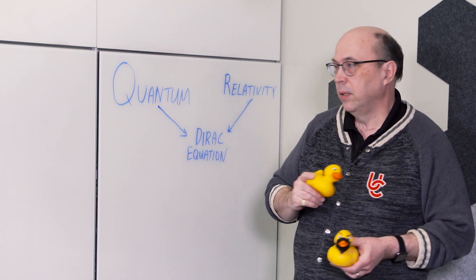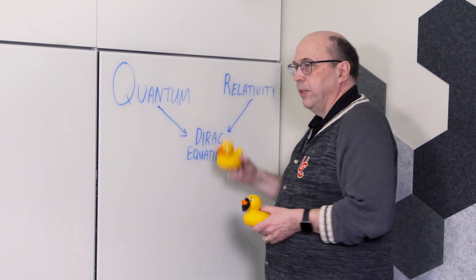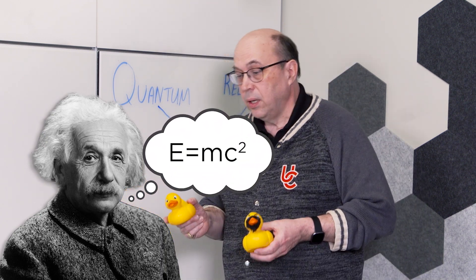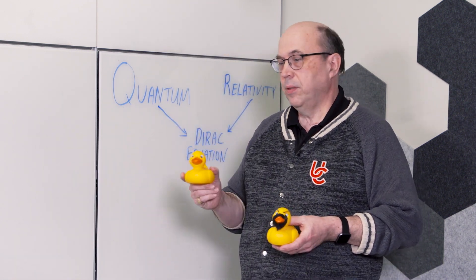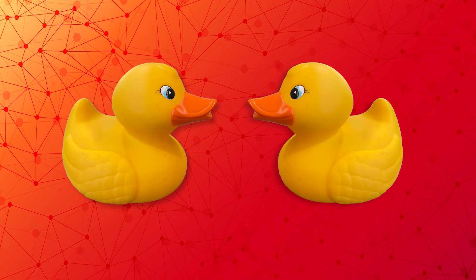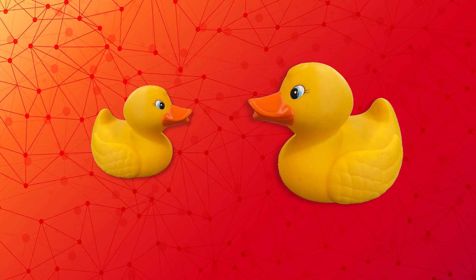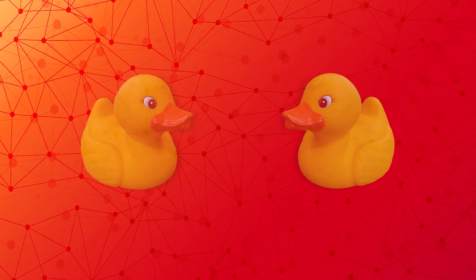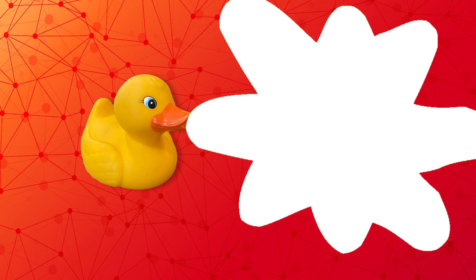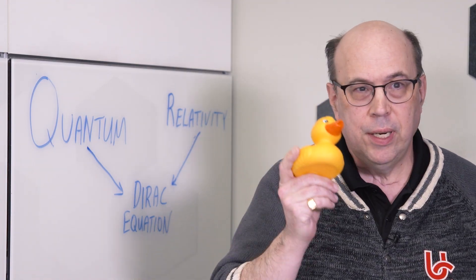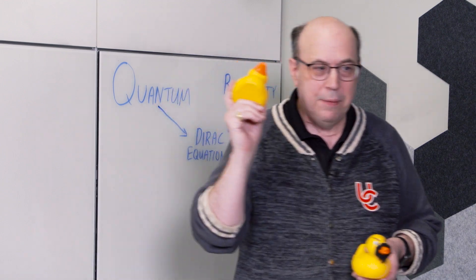But quantum alone doesn't give us antimatter. We need another area of physics: relativity — Einstein's favorite area. His favorite equation, E=mc², comes from relativity. It governs very, very fast rubber ducks and has interesting phenomena like time dilation, things shrinking and stretching, and the twin paradox, where somebody in space ages at a different rate than somebody sitting on Earth.